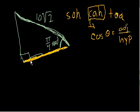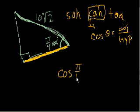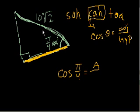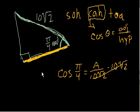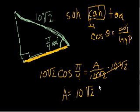Let's use this information to solve for the orange side. We know that cosine of pi over 4 must equal the adjacent side — let's call it a — divided by the hypotenuse, which is 10 square roots of 2. We can solve for a by multiplying both sides by 10 square roots of 2, giving us a = 10√2 × cos(π/4).